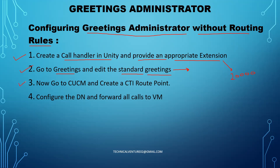Then on CUCM, I'll create a CTI route point. I'll create the CTI route point first, then configure the DN and forward all my calls to voicemail. I'll create one CTI route point, and under it I'll create one directory number with extension 20,000 - the same as the call handler. If somebody calls 20,000, with forward all calls to voicemail enabled, calls will forward to voicemail, and under voicemail you can see the call handler created in Unity so it will reach 20,000 directly.